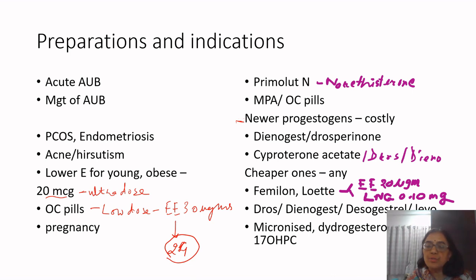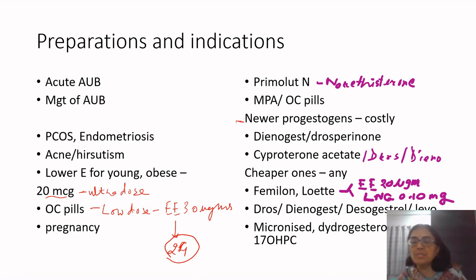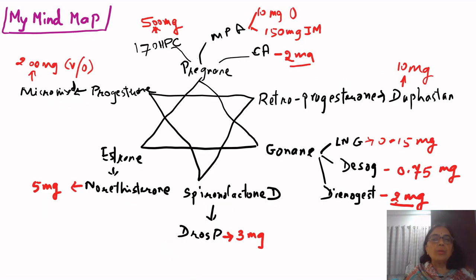In pregnancy, the three choices are micronized progesterone, dydrogesterone (Duphaston), or 17-alpha hydroxyprogesterone caproate (Proluton). Selection depends on the patient's affordability and indication. In summary, for all these indications we have choices among two to three progestogens, and the main deciding factor is often the patient's affordability, especially when treatment is needed for months together.